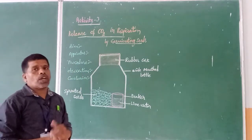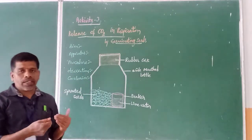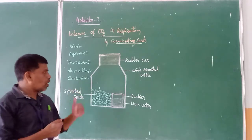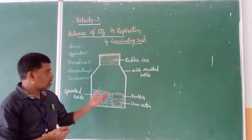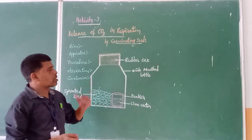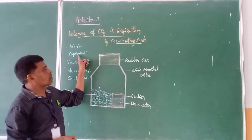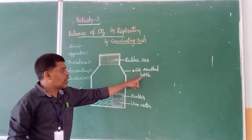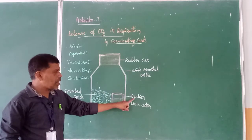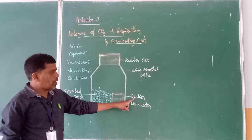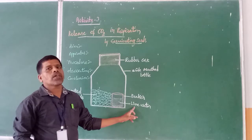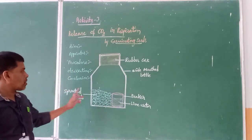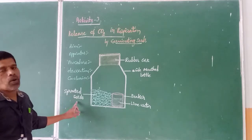For every activity we need to list out what materials we require for the experiment. So here we have the following apparatus: a rubber cork, one wide-mouthed water bottle, a small beaker — 100 ml or bigger — some lime water which is already prepared, and some germinating seeds or sprouted seeds.